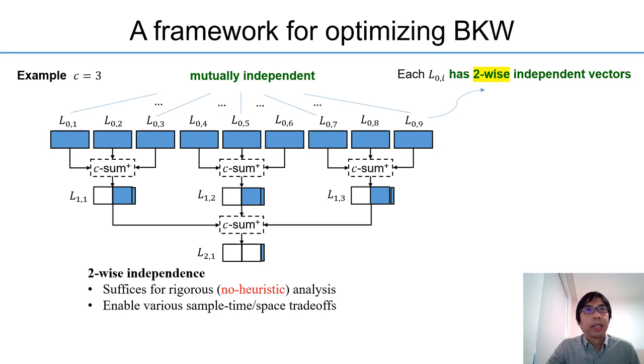During each iteration, we pick c samples, one from each parent node, to cancel out the first b coordinates. And we do this all the way down to the root node where we get many candidates for a single coordinate. Therefore, no repetition is needed.